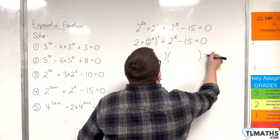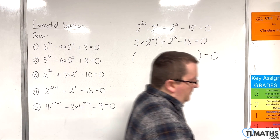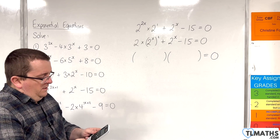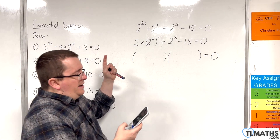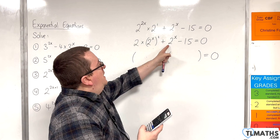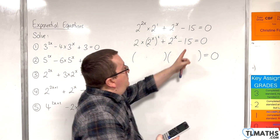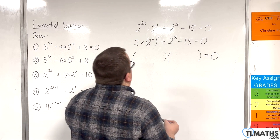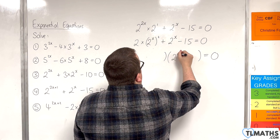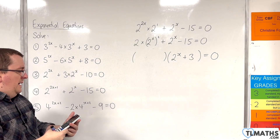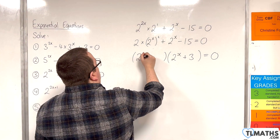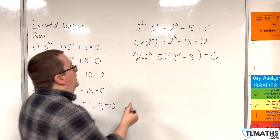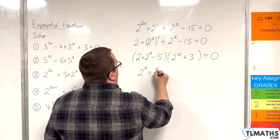Now we want to factorise this. I'm going to use my calculator's solver — polynomial degree 2 — putting in 2 for the 2x squared term, plus 1 for the 2 to the x term, and minus 15. The calculator gives roots of 5 halves and minus 3. Working backwards, this means the factorised form is: 2 to the x plus 3, times 2 lots of 2 to the x take away 5. So 2 to the x must equal 5 halves for that bracket to be zero.